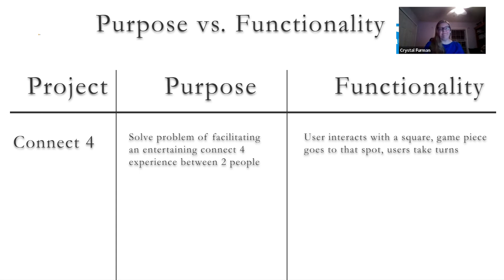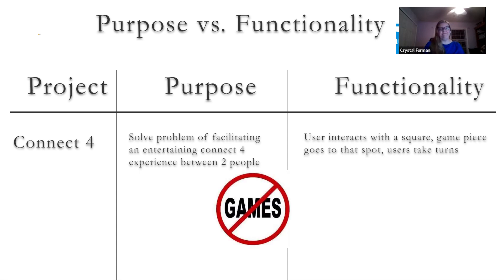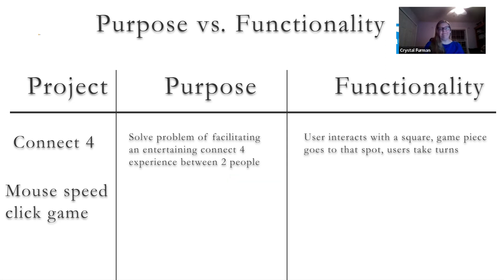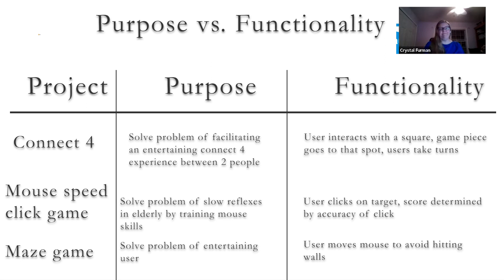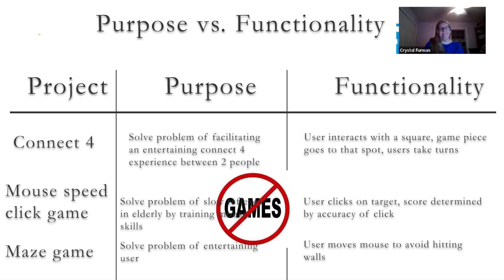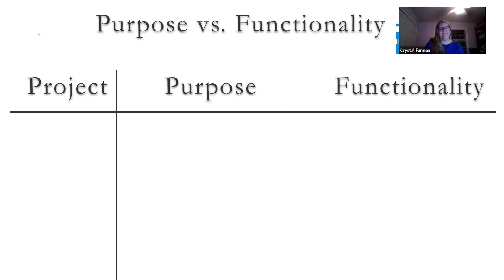There's some important information: the AP board does not like you to make games and does not want you to say entertainment is your purpose. So I'd suggest you don't make something like Connect Four — don't make a straight-up game. The next example was a mouse-clicking game: the problem it solves is the problem of slow reflexes — that's the why — and the functionality is how well you click on something and the score for accuracy. The next was a maze game: the problem is entertaining the user, and how it happens is you use the mouse and avoid walls. Again, these are games — try to avoid making a straight game.